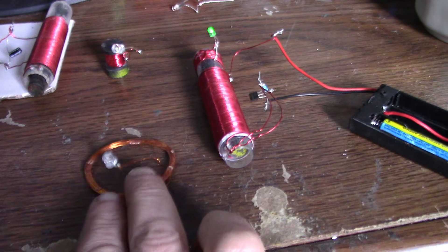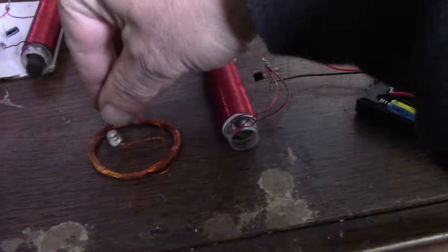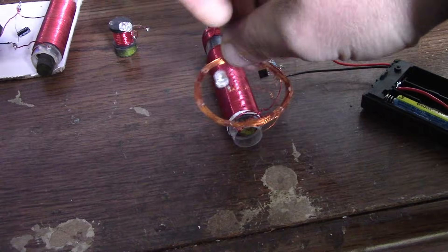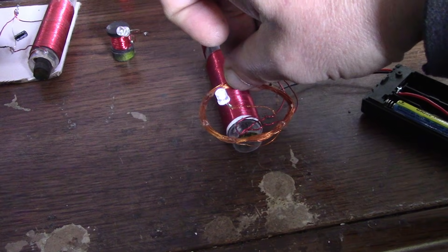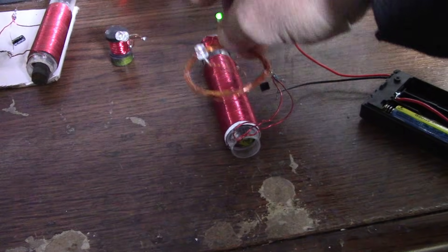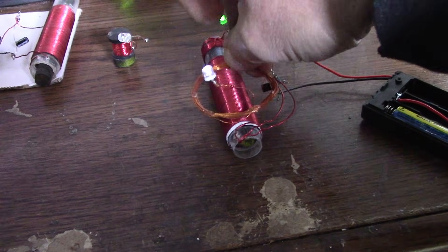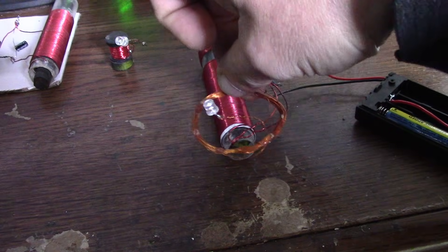We've also got just a loop, 24 turns of wire with no ferrite at all, and this does light up as well. In fact, this one lights up all the way along, a bit more at this end.